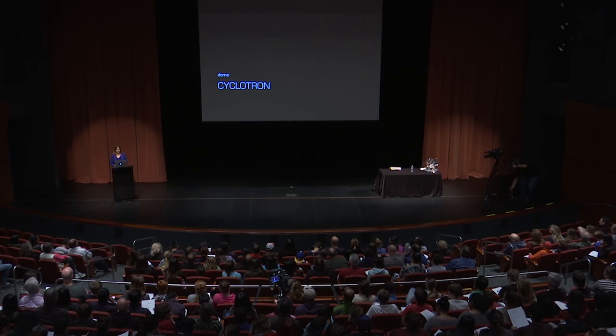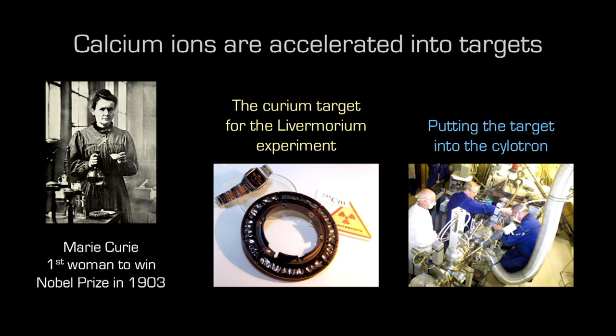Now we're continuing our recipe for how to make a heavy element. You've just seen how we accelerate our calcium to a fraction of the speed of light. Now we need a target, and we can use other materials, not just curium. This is just an example. Curium is a man-made element too, discovered in Berkeley. But the difference is its half-life is long enough that we can actually collect enough of it to make a target. You can see in the center picture the actual target that was used in the discovery of Livermorium. Curium is named after Marie Curie, who's a very interesting figure in science. She was the first woman to win a Nobel Prize, the first person to win two Nobel Prizes in two different fields - one in physics and one in chemistry. She also was the first person to use mobile X-ray units during World War I to help wounded soldiers in the field. So if you ever need a biography, hers is fascinating.